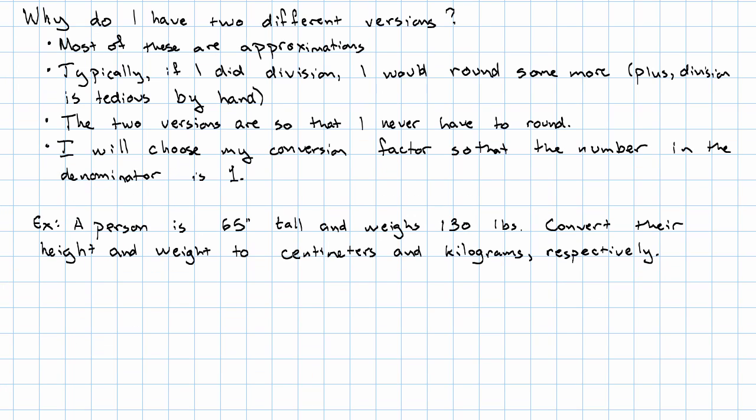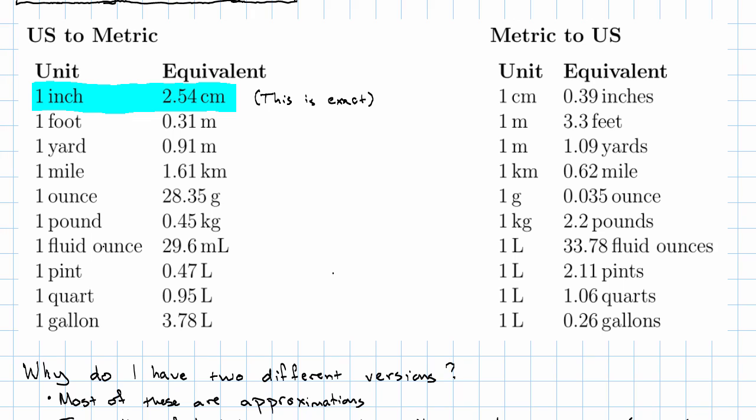I'm starting with 65 inches over 1. I want to multiply that by a conversion factor that has inches in the denominator and centimeters in the numerator. And I want to set it up so that the number in the denominator is 1. So I'm going to look at my table and say, here's a conversion factor that has 1 inch in it and centimeters as the other unit. So 1 inch is 2.54 centimeters.